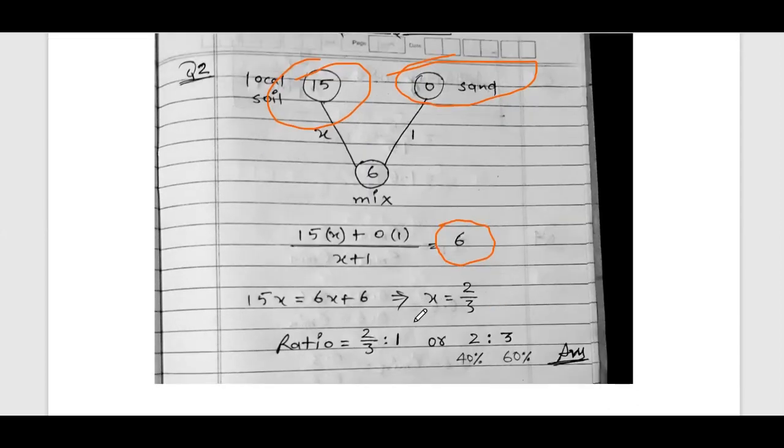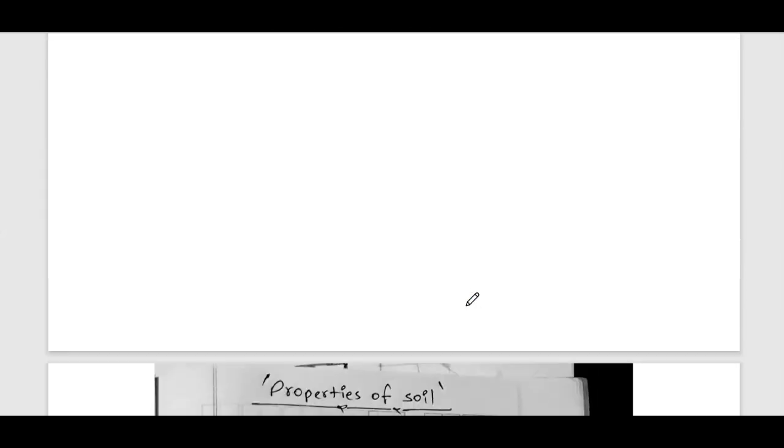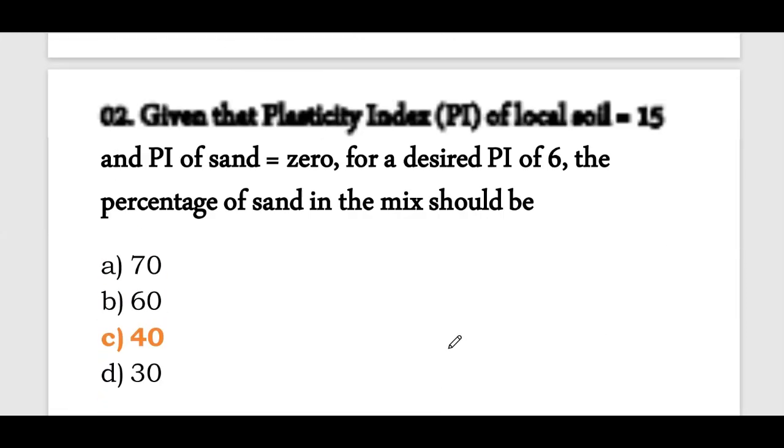From this calculation, 15x equals 6x plus 6, so x equals 2/3. This means the ratio is 2 to 3. That means 2 is 40 percent and 3 is 60 percent. So the correct answer will be option D: 40 percent.